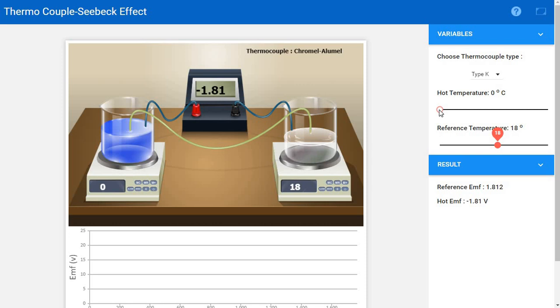When we change the hot temperature, it's 100. See, an EMF is generated. A voltage is generated. The difference in temperature is 106 minus 18, which is 88. When we increase further the hot set temperature, the voltage is further increased. When we keep on increasing the hot set temperature, the EMF is getting increased, step by step.